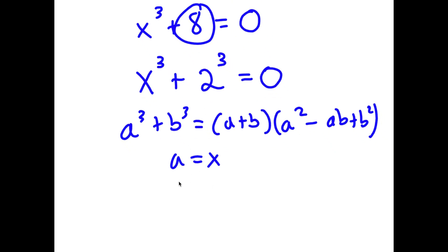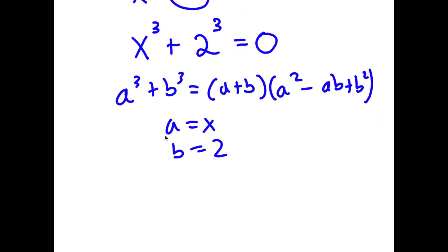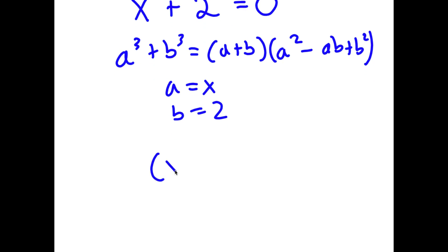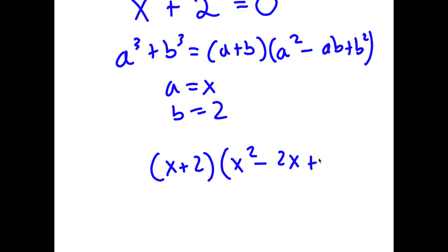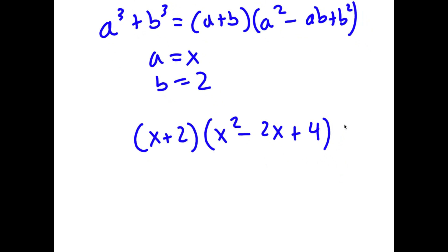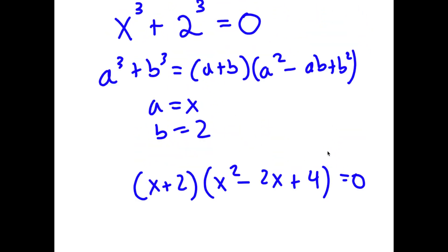In this case, a is equal to x and b is equal to 2. So now I have x plus 2 times x squared minus 2x plus 2 squared, which is 4, and this is equal to 0.